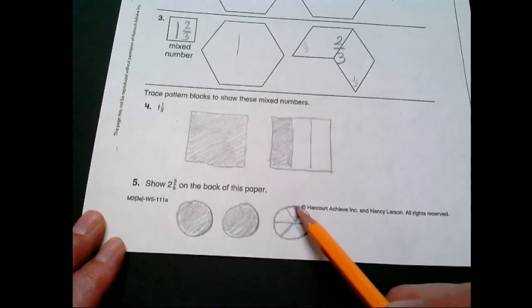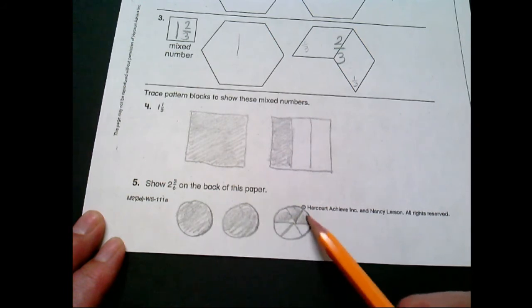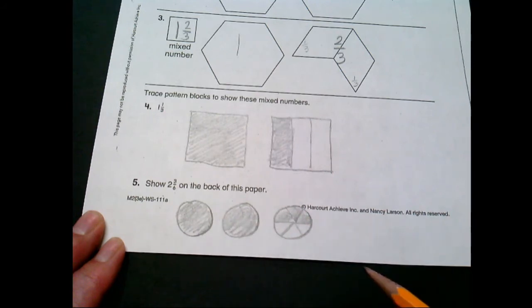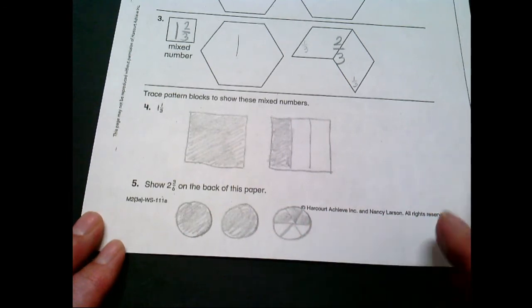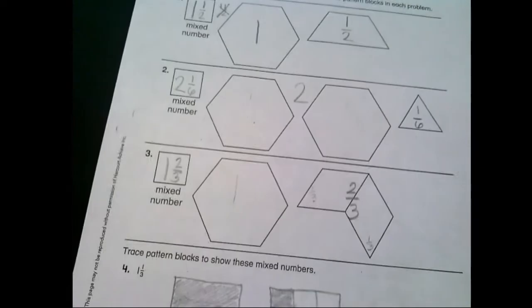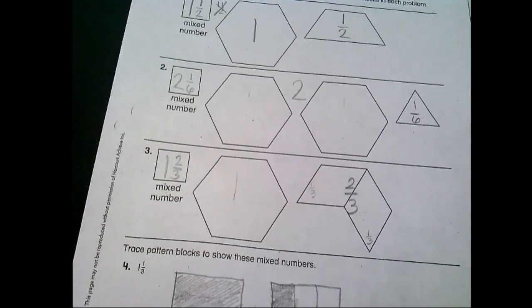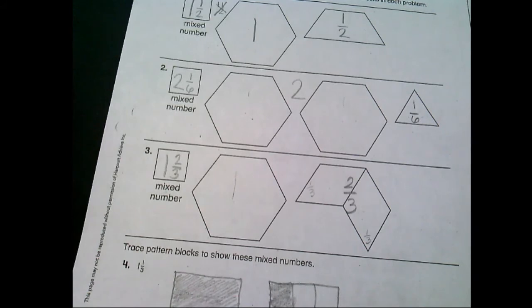And three sixths. So I'm going to color in one, two, three pieces. Two and three sixths. That's how we show that piece. You don't need to send me a copy of this at all, okay? That's fine. We did this all together. Tomorrow we're going to do more work with mixed numbers. And now I'm going to head back to my other screen.